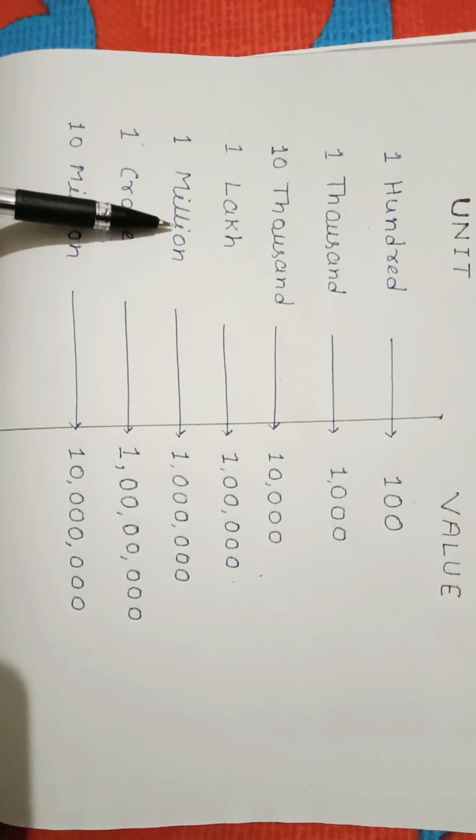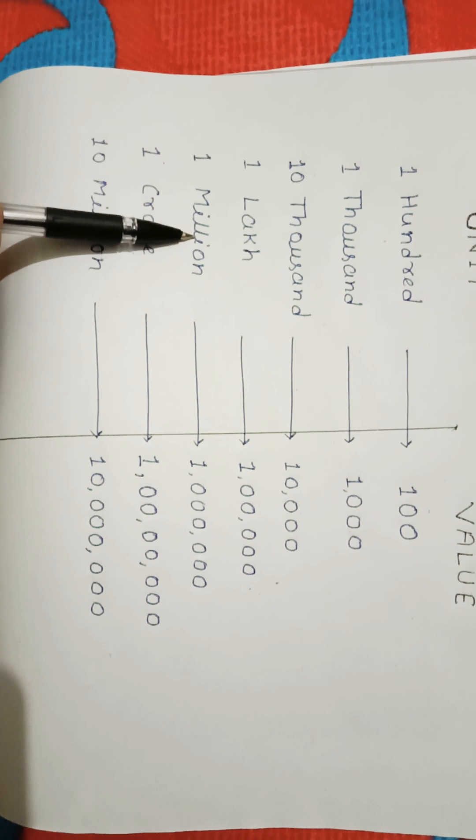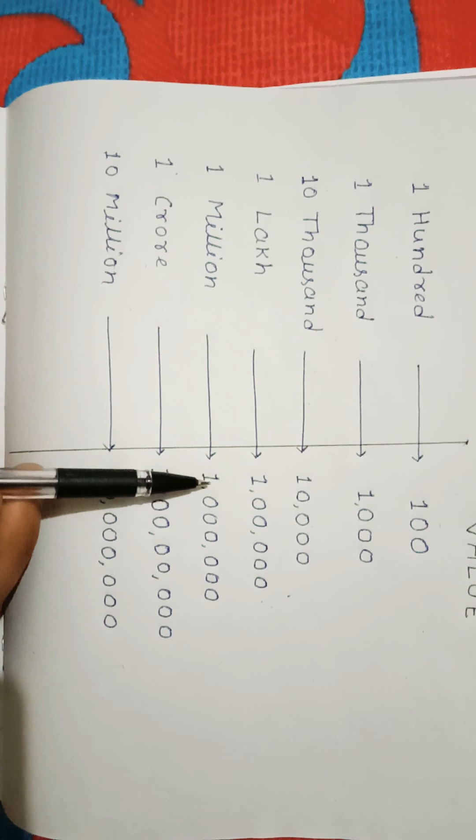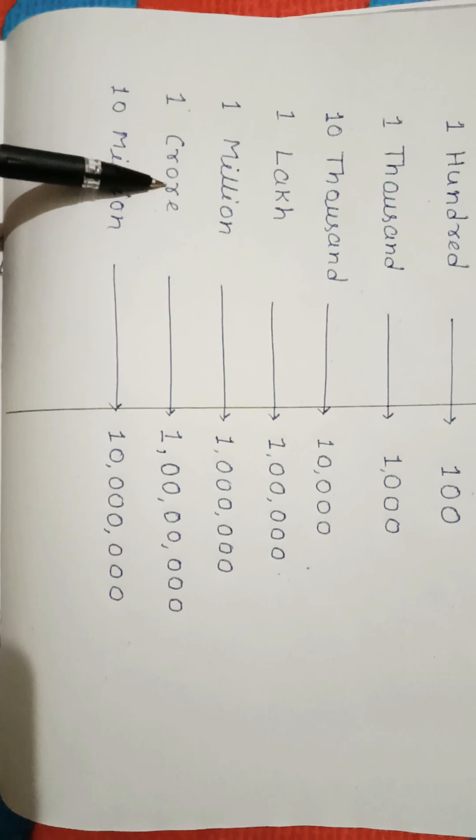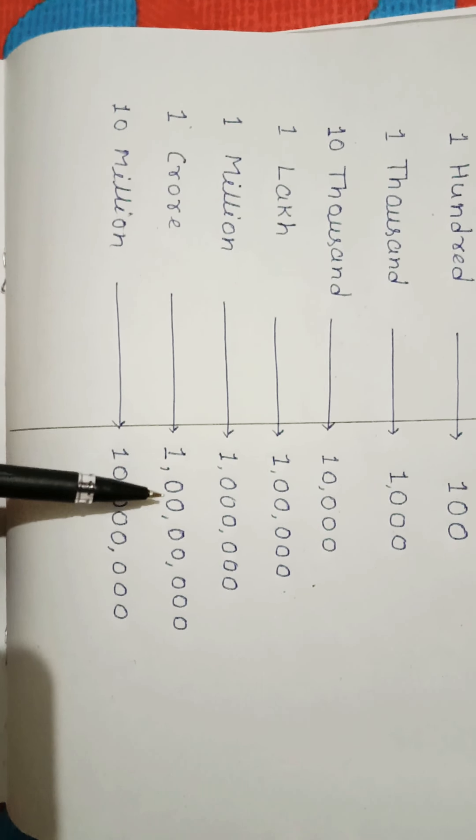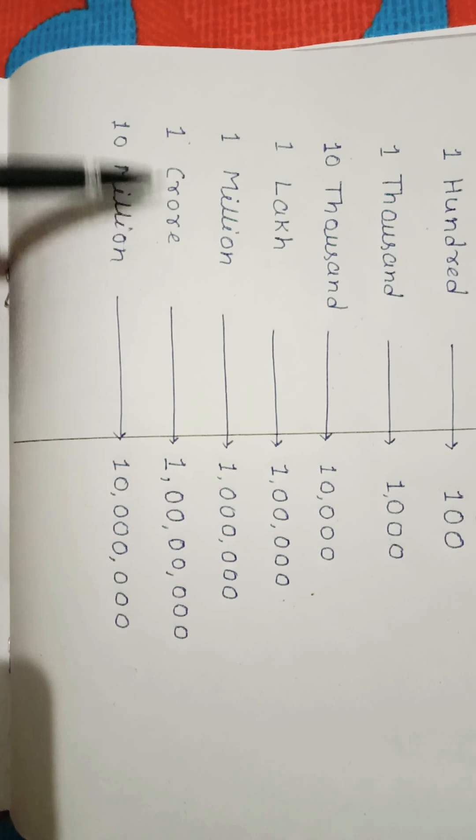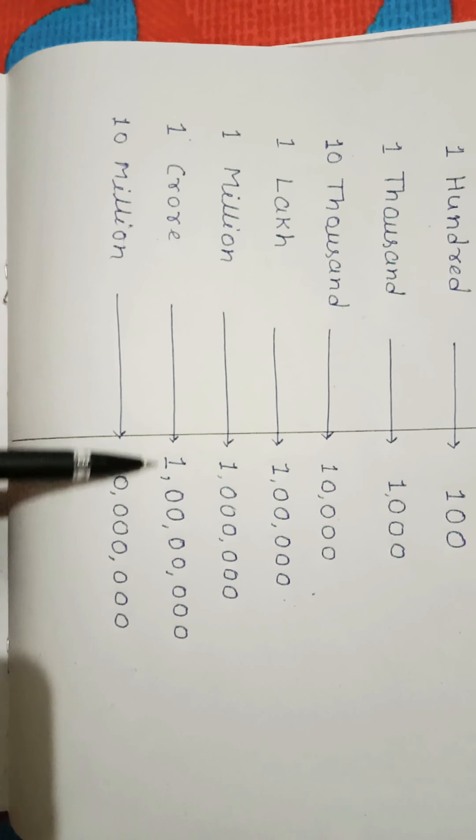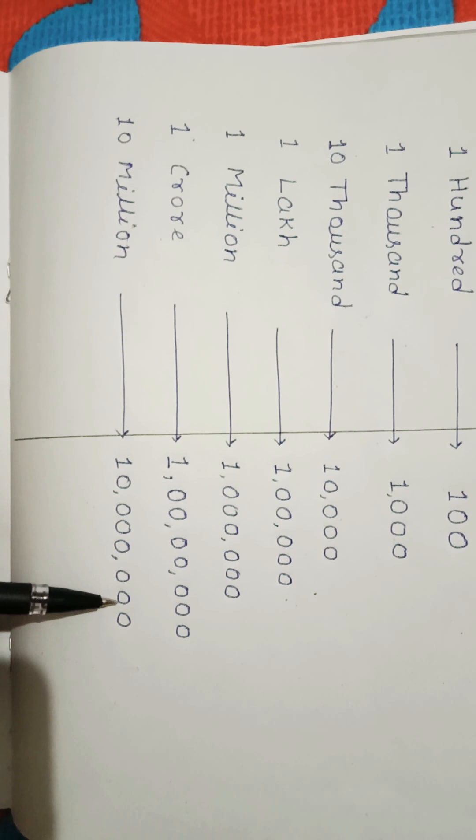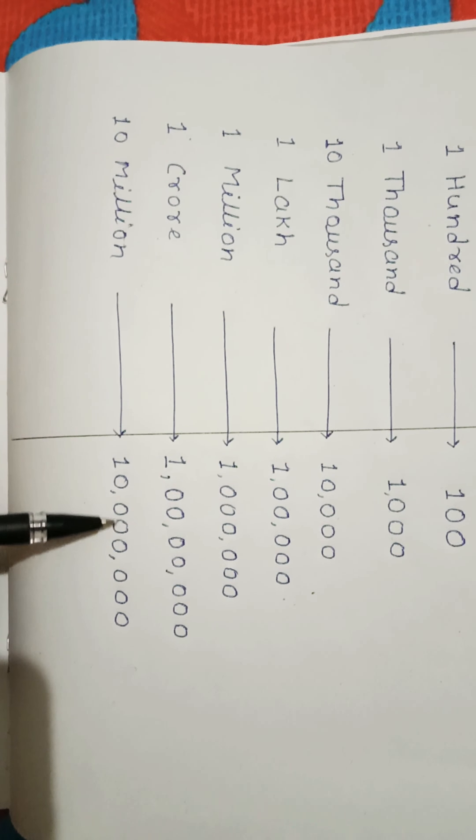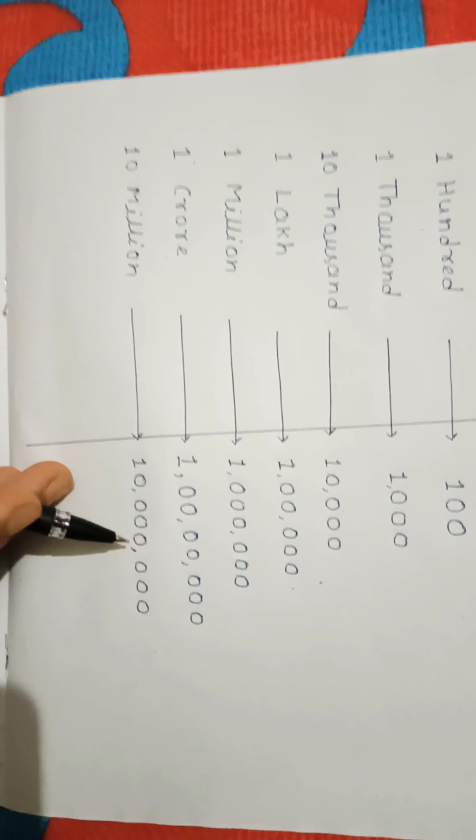The value of one lakh is 1 having five zeros. The value of one million, it is new for you, it is in international system of numeration. The value of one million is equivalent to ten lakh which is 1 having six zeros. The value of one crore is 1 having seven zeros, and the value of ten million is 1 having seven zeros.